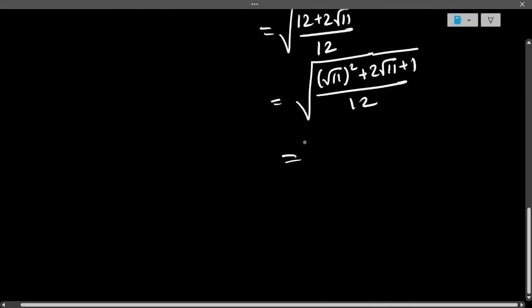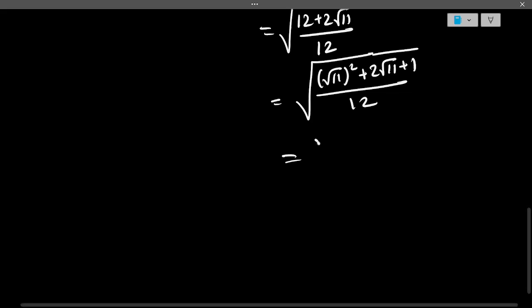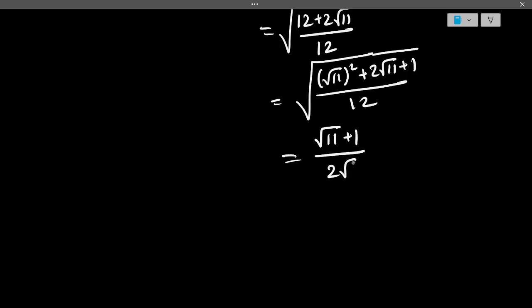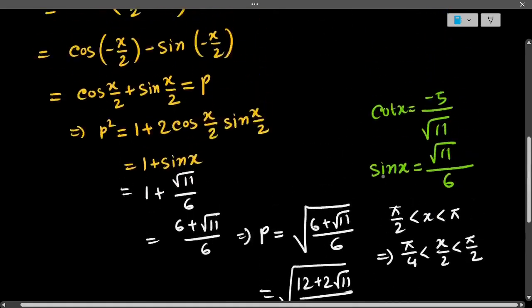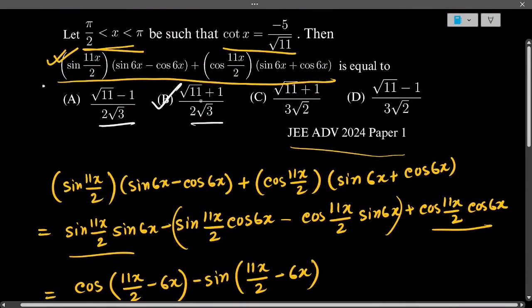Now the numerator will be (√11 + 1)² and if we get that out of the root, it will be (√11 + 1), and √12 = 2√3. So we got the answer. The answer will be option B.